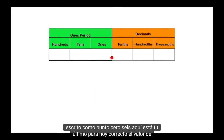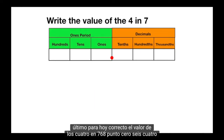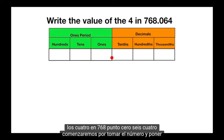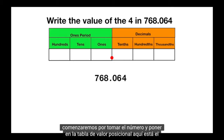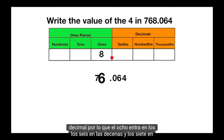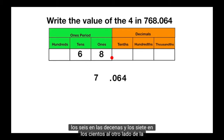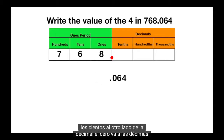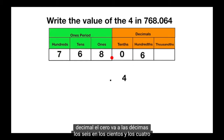Here's your last one for today. Write the value of the 4 in 768.064. We'll start by taking the number and putting it on the place value chart. Here's the decimal, so the 8 goes into the ones, the 6 into the tens, and the 7 into the hundreds. On the other side of the decimal, the 0 goes into the tenths, the 6 into the hundredths, and the 4 into the thousandths.